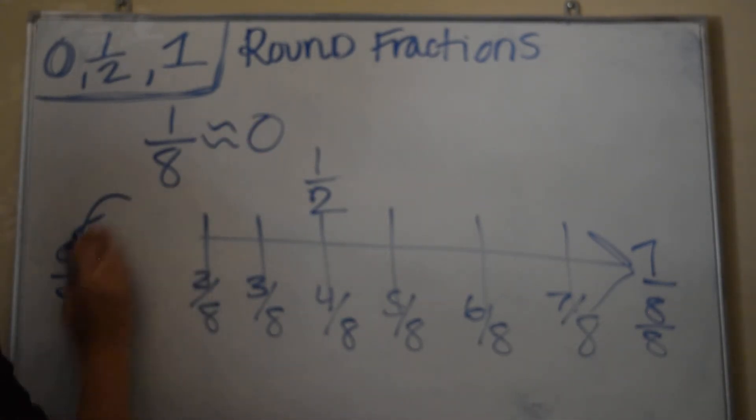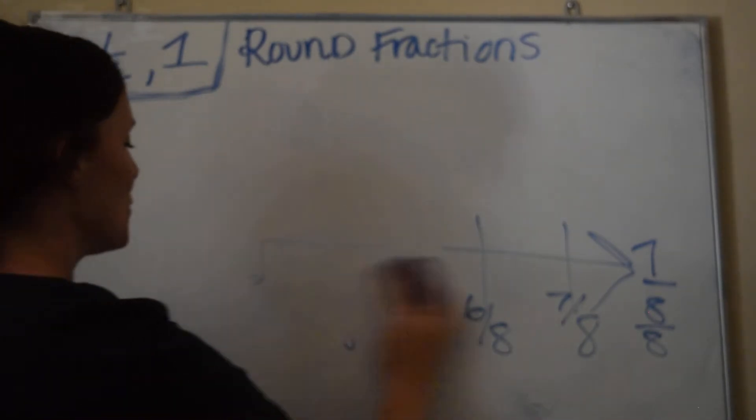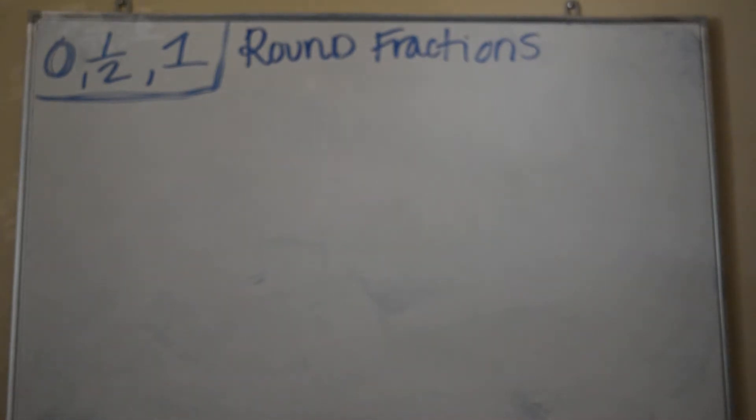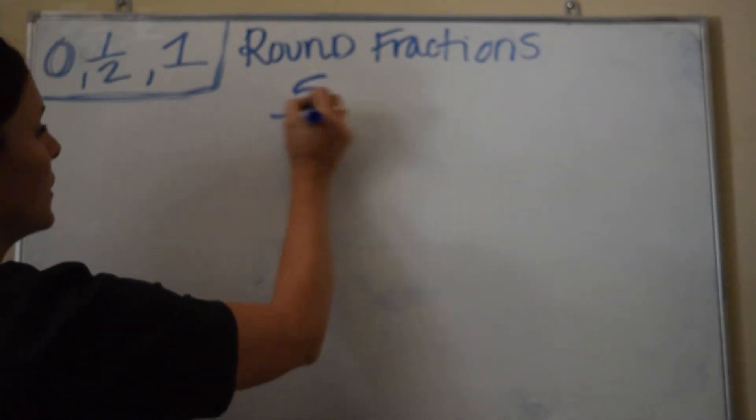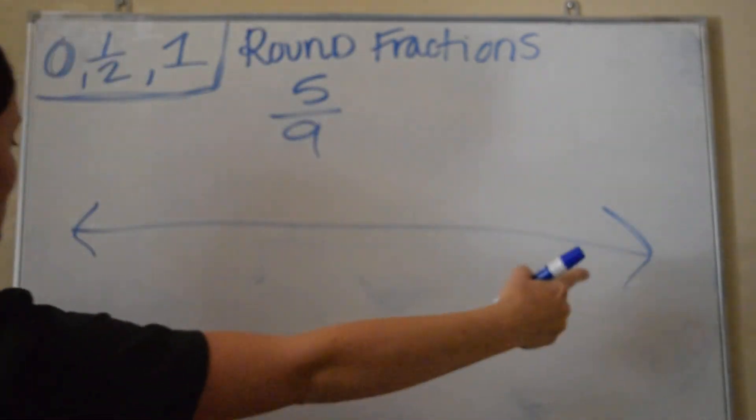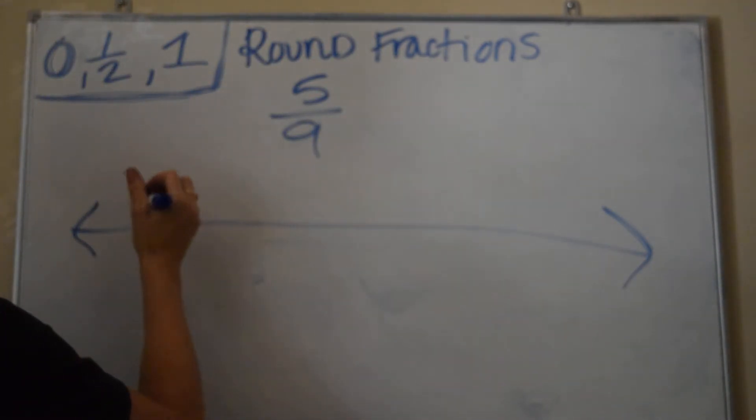Alright, let's do one more with a different scenario, and then you guys should be good to go. So let's say I have 5/9ths. The denominator represents how many I have. I have 9 pieces, so let's go ahead and draw 9, which means I need 8 lines.